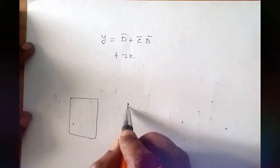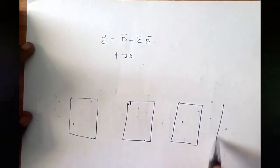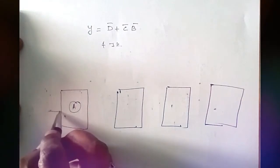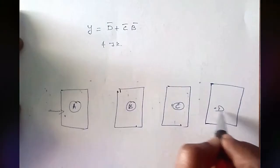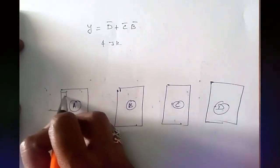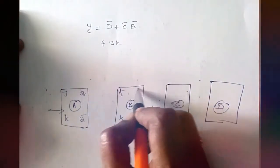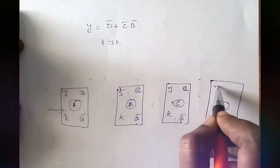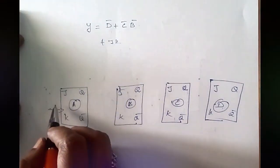Now we draw the logic diagram. The reset logic is D complement plus C complement B complement, and we have 4 JK flip-flops. We draw 4 flip-flops: flip-flop A which receives the first clock pulse, flip-flop B, flip-flop C, and flip-flop D, each with J, K, Q, and Q complement terminals.